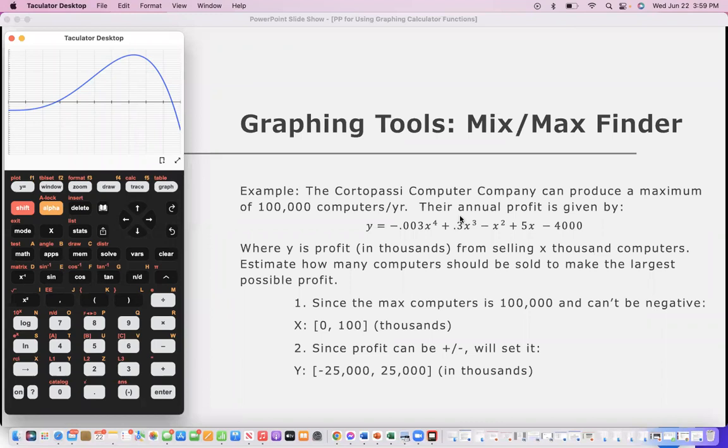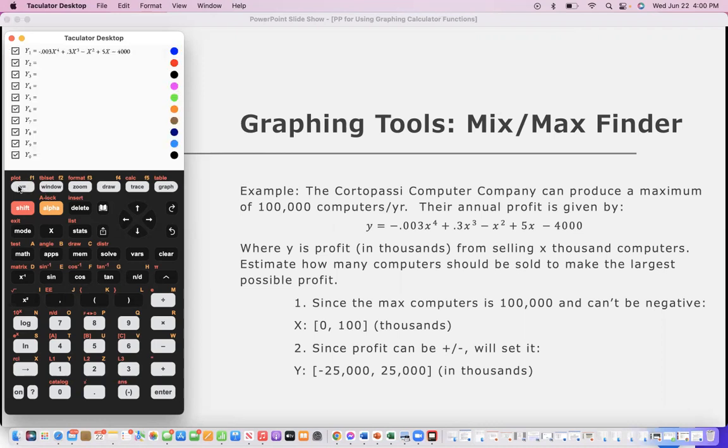The next feature I want to show you is the min and max finder, and we're going to use this example here. So this is a profit and loss equation and the x value is representing the computers that are made in a year and then the y is my profit that's made. And we're told that this company can produce a maximum of a hundred thousand computers, and y is my profit in thousands, x is in thousands of computers. So as I put this into my calculator, go ahead and pause the program and do so.